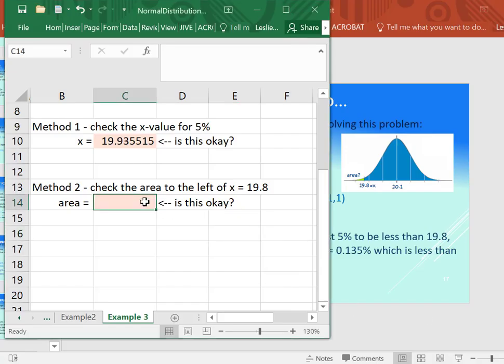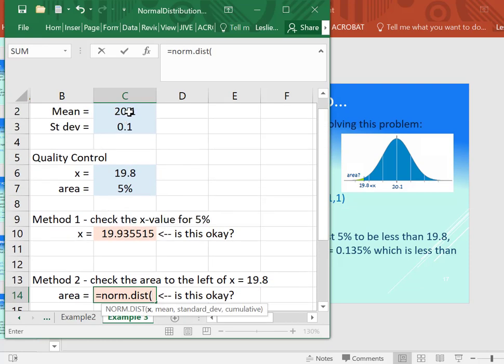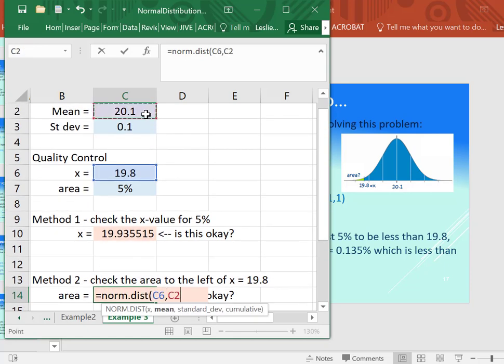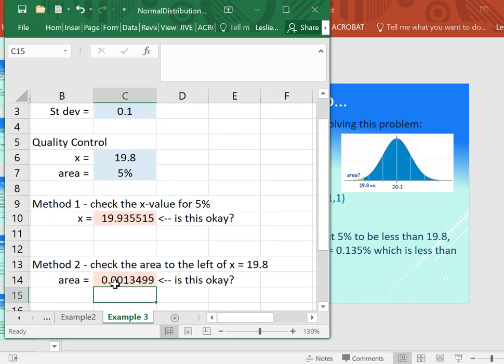So here we are. We use the norm.dist and we go grab the 19.8 for our x value, 20.1 for our mean, standard deviation at 0.1 and put in the comma 1. And here we are. Here's our answer. So is this okay?